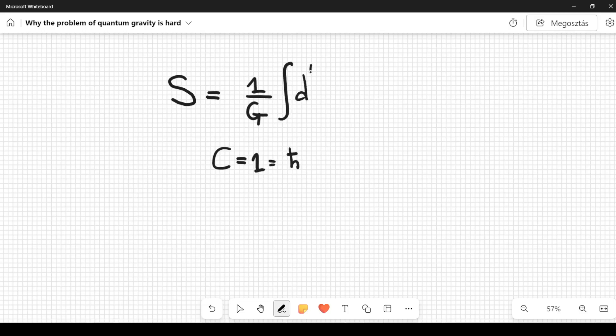And then here we have an integral over d⁴x square root of minus the determinant of the metric tensor, and then we have the Ricci scalar.